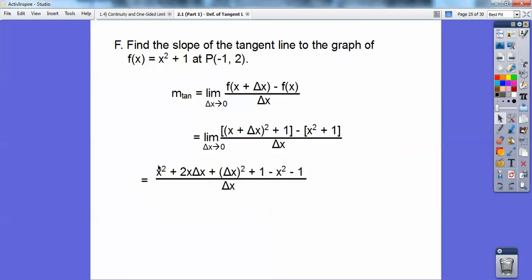Can you see this x² and this x² cancel out, and this 1 and this 1 cancel out? So it simplifies to this right here.